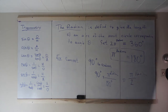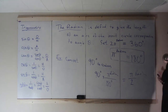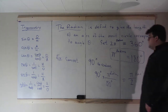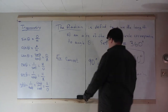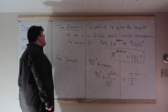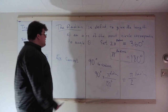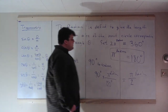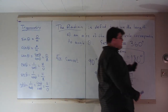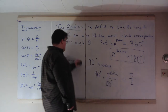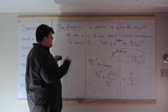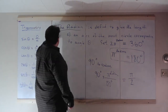Everything we do involving evaluating trig functions will be at radian measures. From now on, I will not write out the word 'radians' — it will be assumed, since radian is a long word to write all the time.